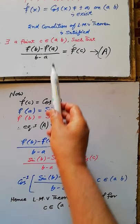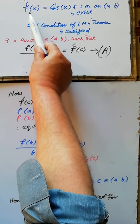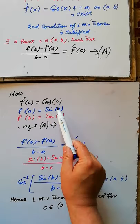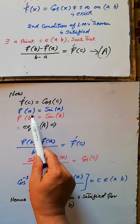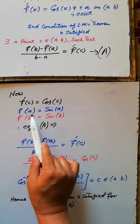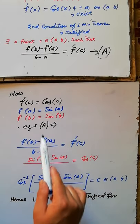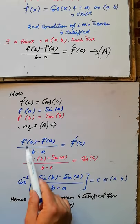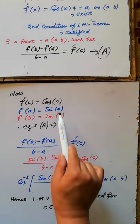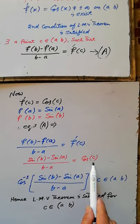Now, the derivative of the function at point c is f'(c) = cos(c), and the values of the function at the endpoints are f(a) = sin(a) and f(b) = sin(b). According to the equation, [f(b) - f(a)] / (b - a) = [sin(b) - sin(a)] / (b - a) = cos(c).